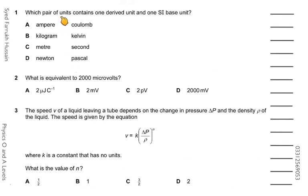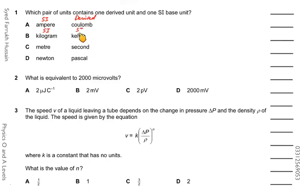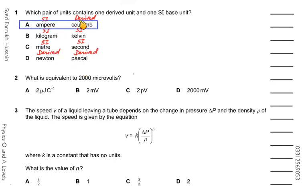In the next question, we must find the pair containing one derived unit and one SI base unit. Ampere is an SI base unit; coulomb is derived. So option A is correct because one is an SI base unit and the other is a derived unit.